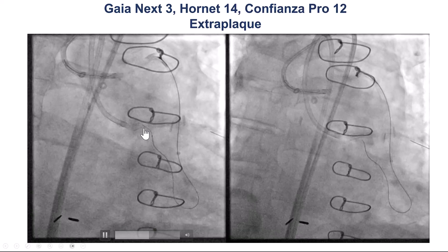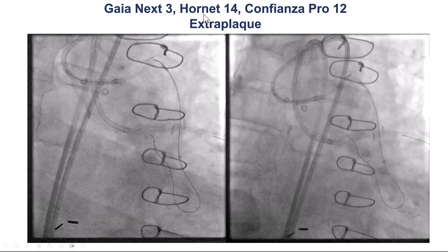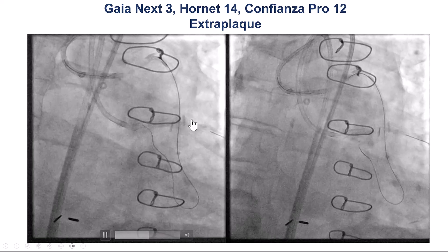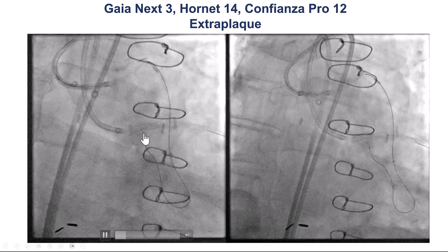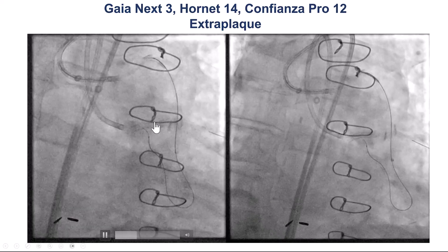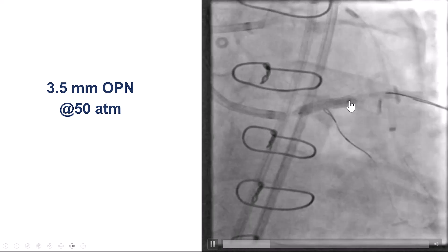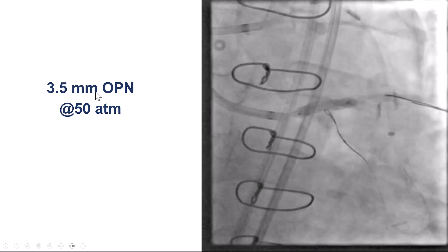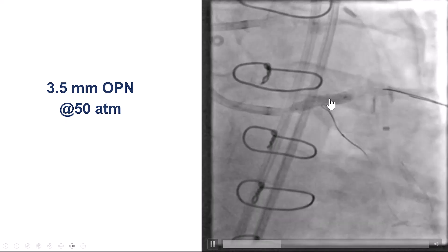We came very close to the left main and tried multiple wires, including Gaia NX2, Hornet 14, and Confianza Pro 12, but all the wires remained extraluminal. We were not able to make it through the layers of stent. We did IVUS on the left main, and there was significant stent underexpansion, so we went ahead and ballooned it with a 3.5 mm OPN balloon up to 50 atmospheres, which successfully expanded the stent.